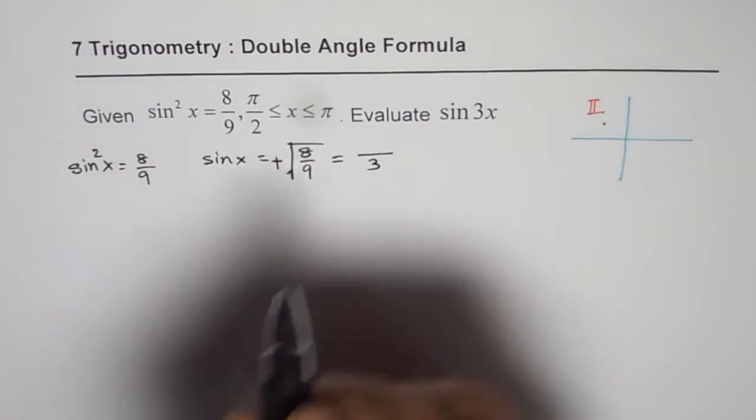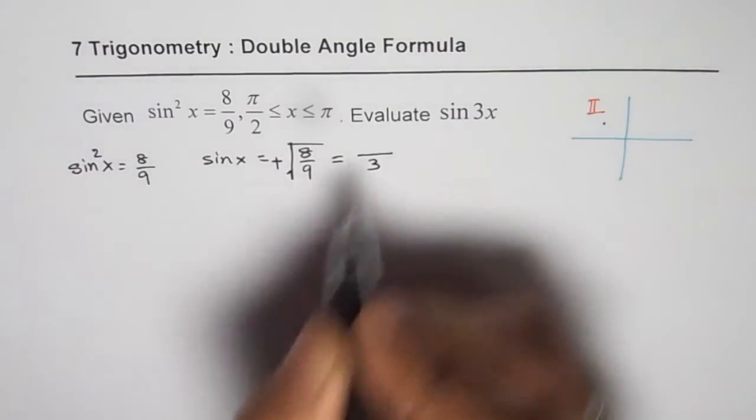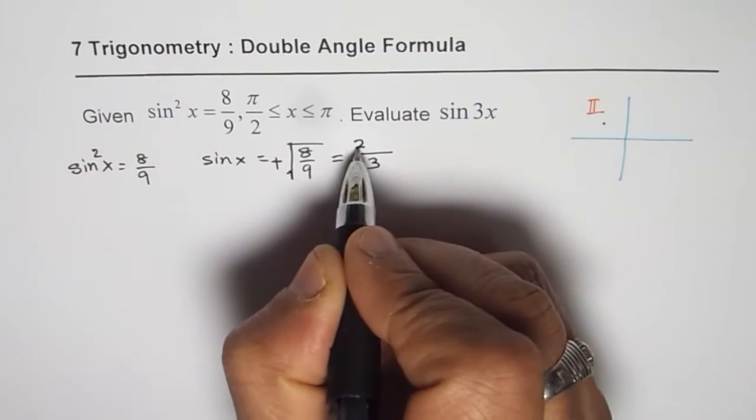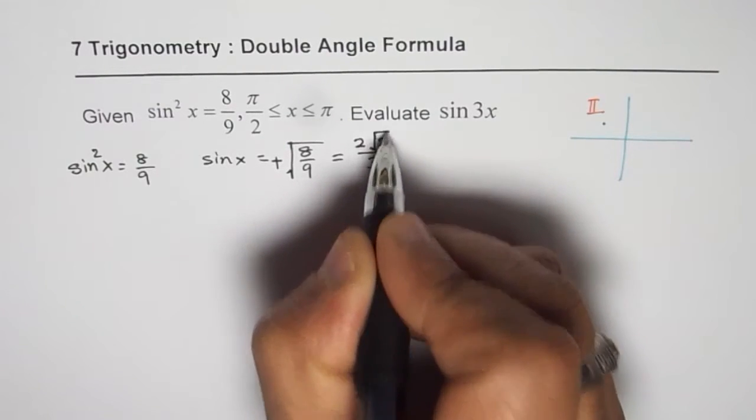So here, what do you get? Square root of 9 is 3, but 8 can be written as 2 times 4. So we could write 2√2/3.